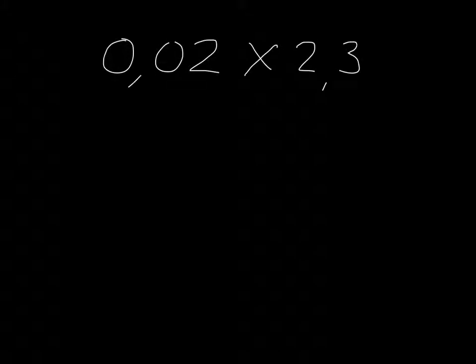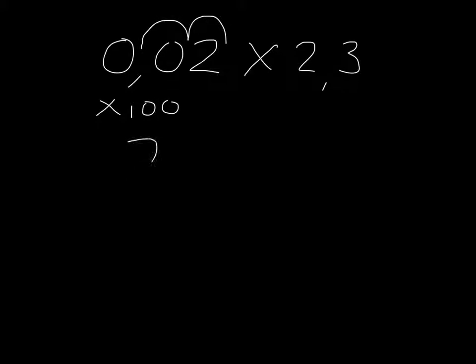Let's do another example. If we needed to do 0,02 times 2,3, again, I'm going to cheat. Get rid of those decimal places. So in other words, I'm going to multiply this by 100, moving 2 to the right. Multiply this by 10, moving 1 to the right. And I'm going to get 2 times 23, which is 46.